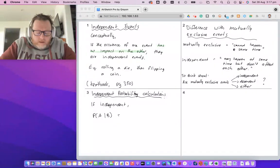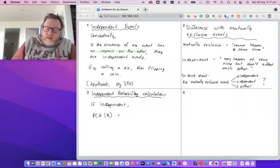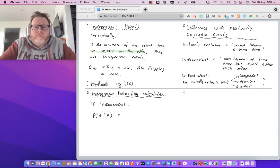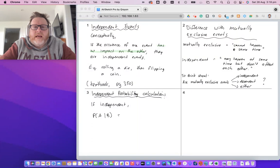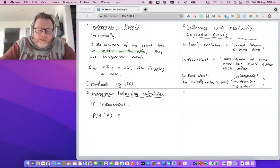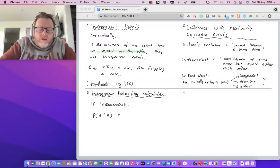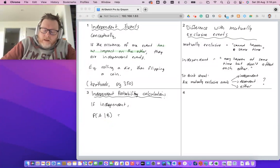The impact on this idea of an independent event is as follows: if we look at conditional probability, if A does not impact on B - if you've got two events A and B and they're independent - then the probability of A given B must be the probability of A.